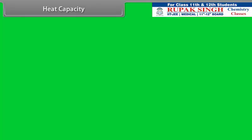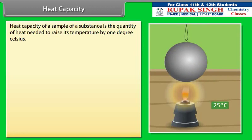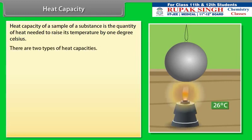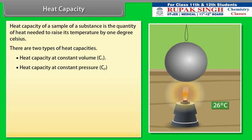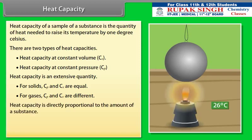Heat capacity of a sample of a substance is the quantity of heat needed to raise its temperature by 1 degree Celsius. There are two types of heat capacities: heat capacity at constant volume and heat capacity at constant pressure. Heat capacity is an extensive quantity. For solids, Cp and Cv are equal; for gases, Cp and Cv are different. Heat capacity is directly proportional to the amount of a substance.